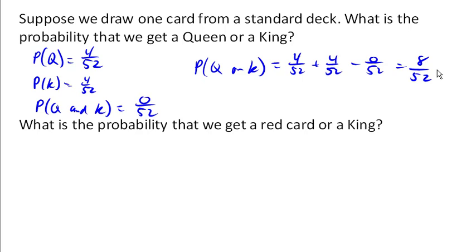The reason that we ended up with this 0 here is because these two events, the probability of getting a queen and the probability of getting a king are mutually exclusive. There's no overlaps. And so in this simple case, in this case of mutually exclusive...